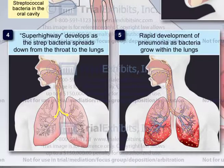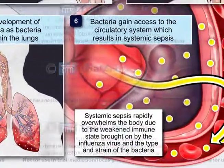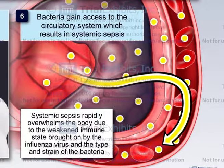Once in the lungs, the bacteria rapidly proliferate, resulting in a quick onset of pneumonia. Finally, the bacteria gain access to the circulatory system, resulting in systemic sepsis that overwhelms the body, since the body's immune system has already been weakened by the influenza virus.